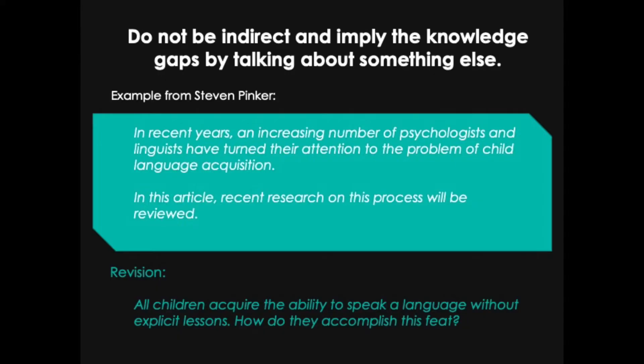His fix for this is to revise that first sentence as such: 'All children acquire the ability to speak a language without explicit lessons. How do they accomplish this feat?' That revision is very clear and very direct — much easier to understand.